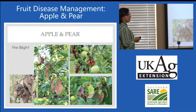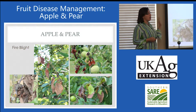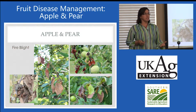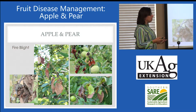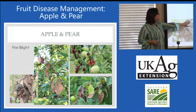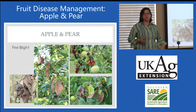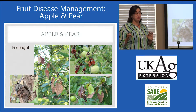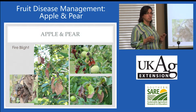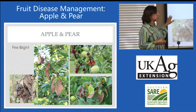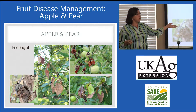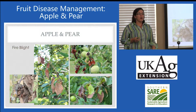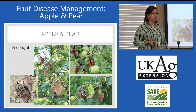Our number one disease on apple here in Kentucky and a lot of the region is fire blight. Fire blight is recognized primarily by that shepherd's crook symptom that occurs right about May, June. June is usually when the panic stage starts, when leaves start to scorch and blight — that's why we call it blight. It's sudden death, and the brown or black leaves hang on. But fire blight happens much earlier.